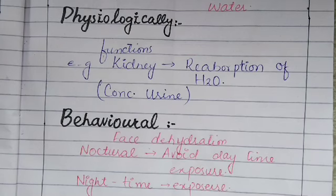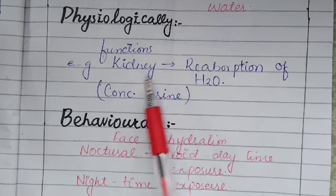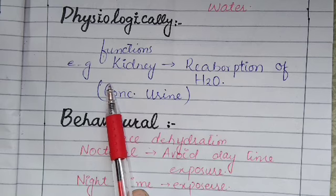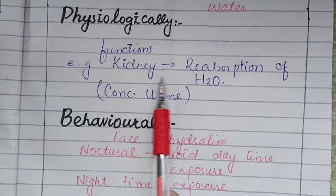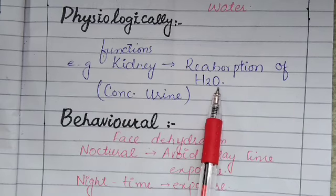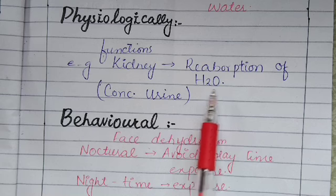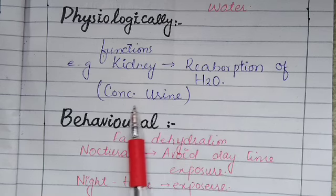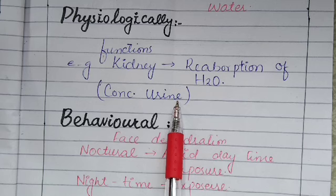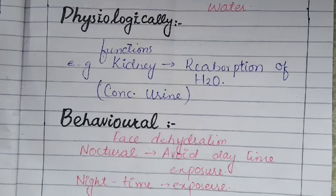If we talk about physiological adaptations, these involve functions within the body of any living organism. In humans, for example, the kidneys increase the absorption of water to prevent water loss, and they produce concentrated urine.